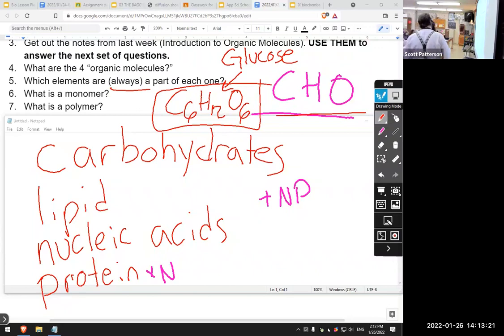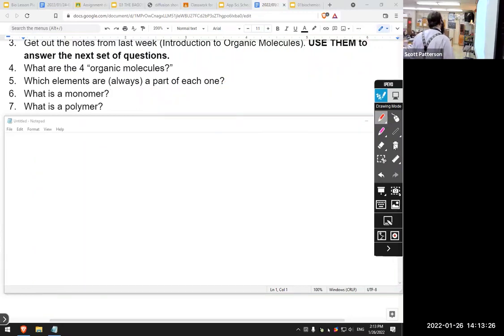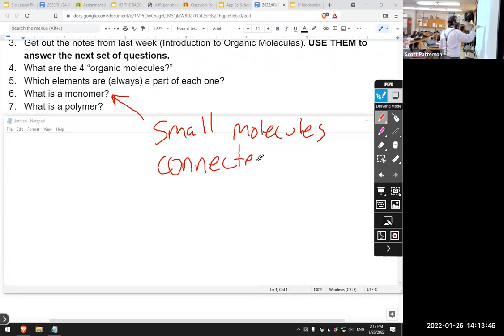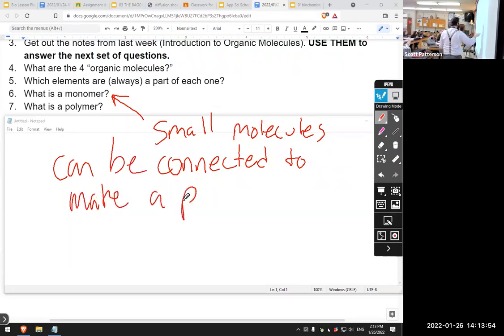You know the next one? What is a monomer? Monomers are small molecules that can be connected to make a polymer. Yes, small molecules. Perfectly legible, everyone can read it.